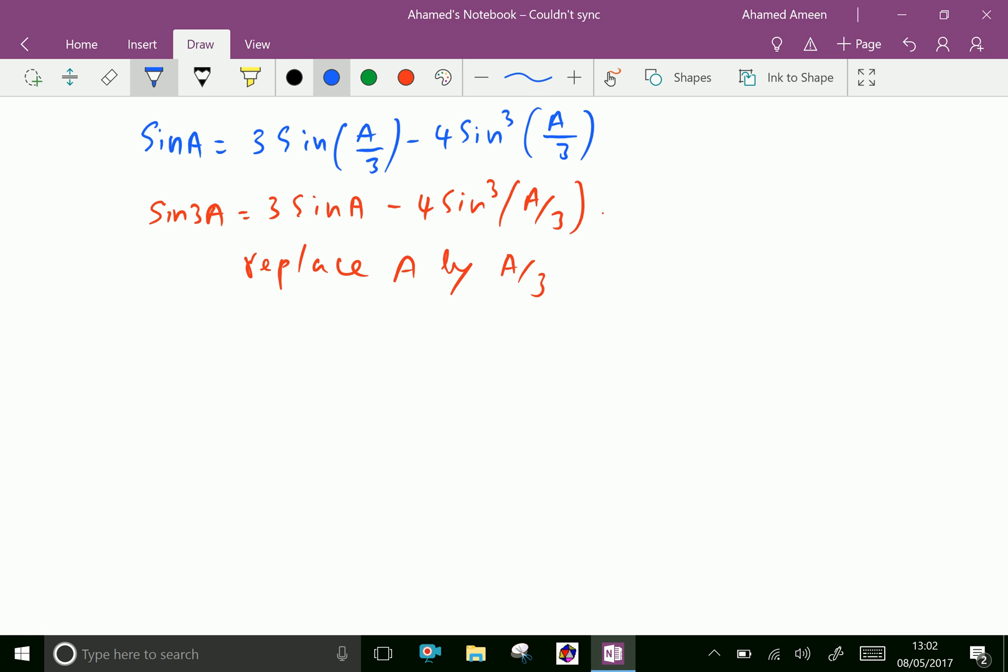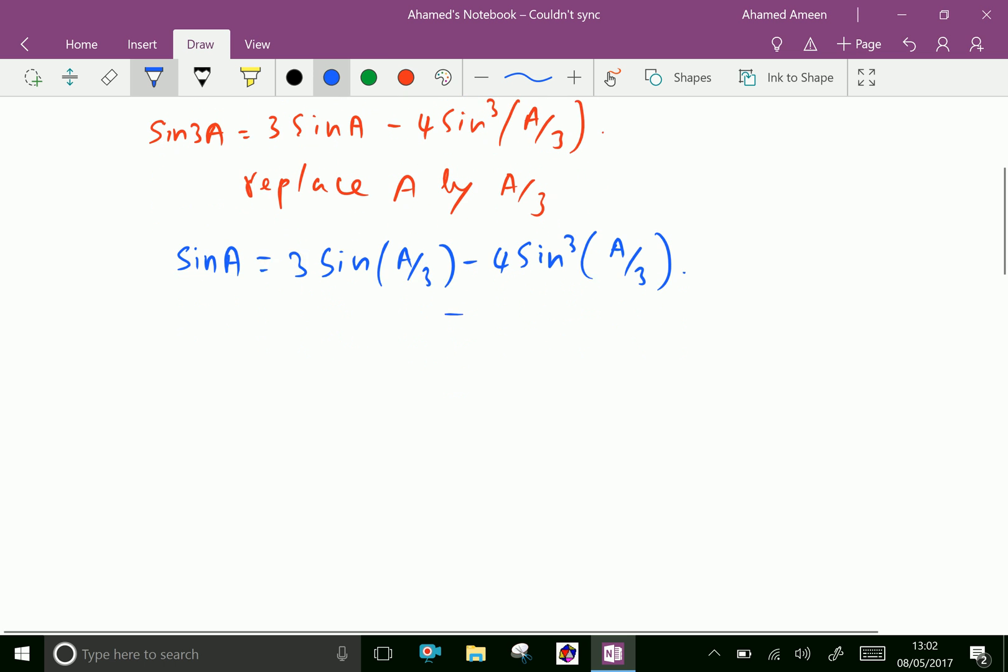instead of sin 3A, we are writing sin A, and instead of A, we are writing A/3, that is 3 sin(A/3) minus 4 sin³(A/3). We proved. Similarly...